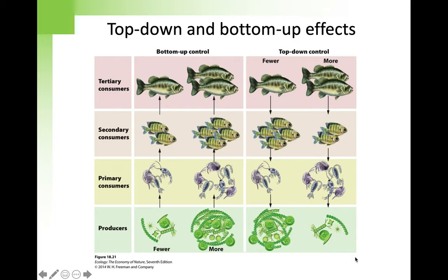So sea otters are another keystone species — they regulate the structure of this coastal marine community. The results are unambiguous: sea otters drive this system from the top down. The message is clear and has been enormously important in how ecologists view the world.